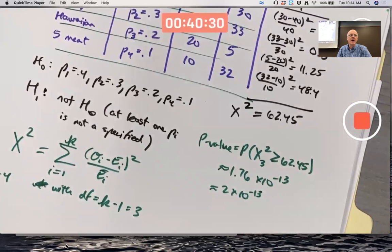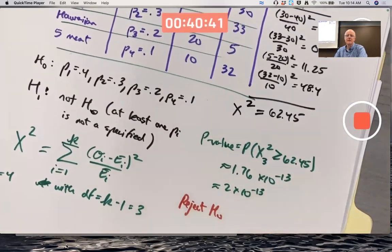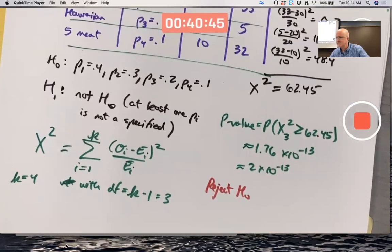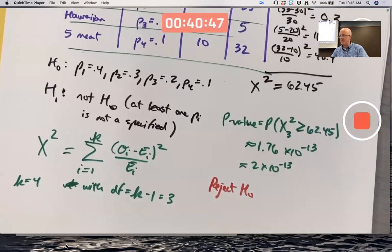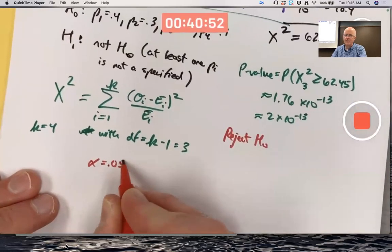Therefore we are very confident the null is false, we reject. Is it possible to do the classical approach instead of the p-value approach? Yeah. If we were doing the classical approach with deciding what alpha is ahead of time, say 0.05.